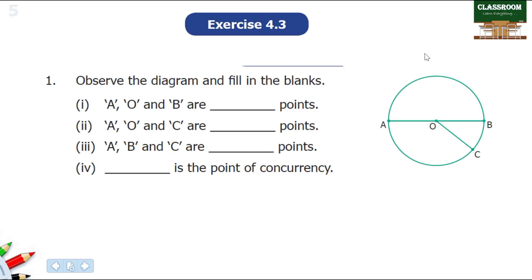So, first question — Exercise 4.3, question one: Observe the diagram and fill in the blanks. A, O, B are on one line. So A, O, B are collinear points.